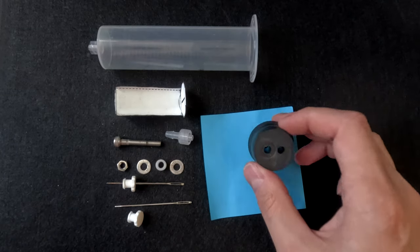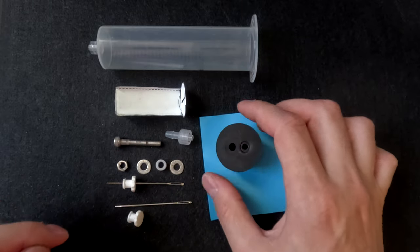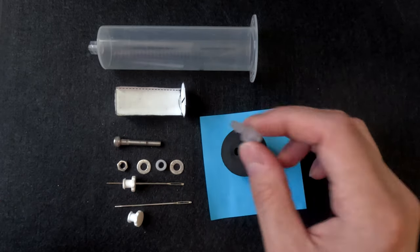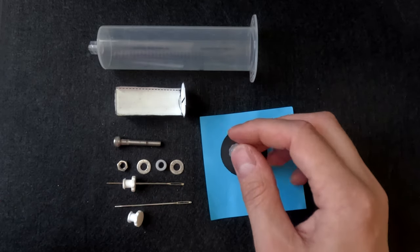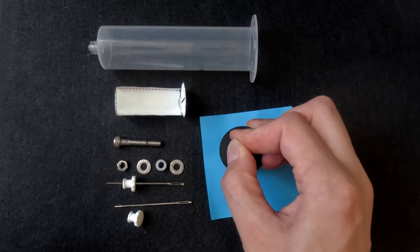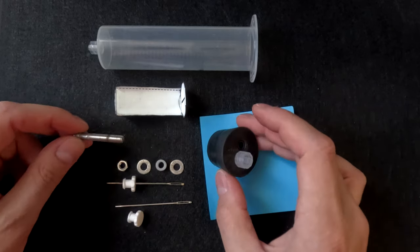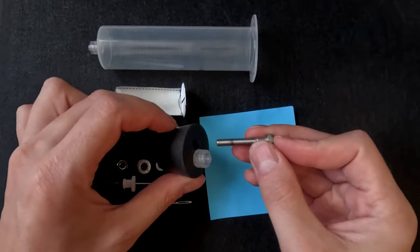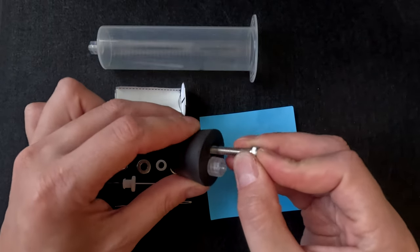First, to construct the plug assembly, the lure lock hose barb is pressed into one of the two openings. The hex head screw is inserted through the other opening.